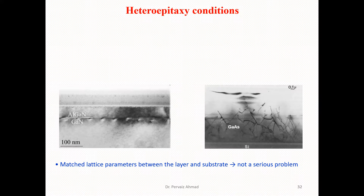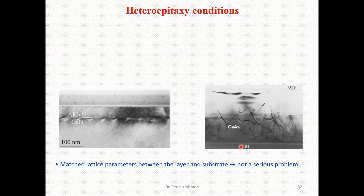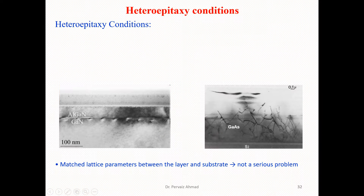Regarding heteroepitaxy conditions — as defined in the previous slide — you can observe here aluminium gallium nitride film on a gallium nitride surface, and also a film going on a gallium arsenide or silicon substrate. In this particular micrograph you can see matched lattice parameters between the layer and the substrate, meaning it is not a serious problem.